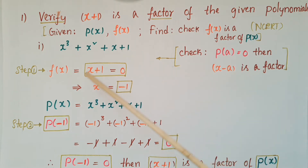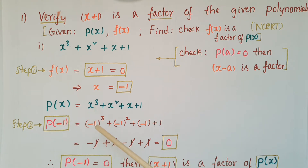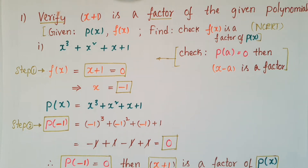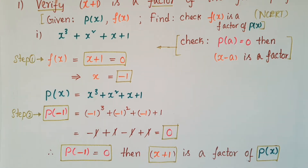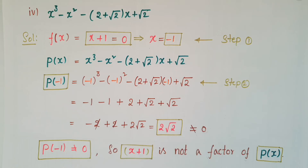First, make x plus 1 equal to 0, then x equals minus 1, so a is minus 1. Then p(minus 1) equals (minus 1)³ + (minus 1)² + (minus 1) + 1, which equals 0. So p(minus 1) equals 0, then x minus a — that is, x minus (minus 1) — which is x plus 1, is a factor of p(x).